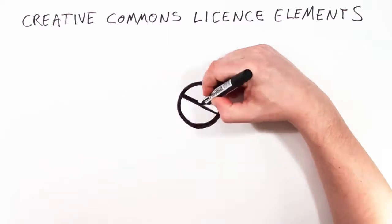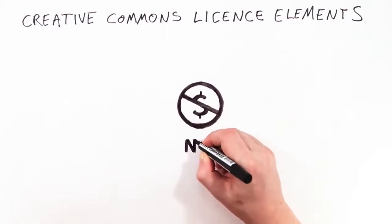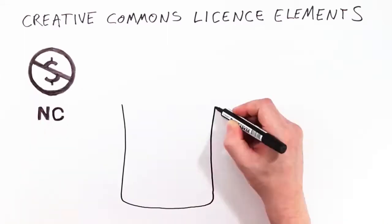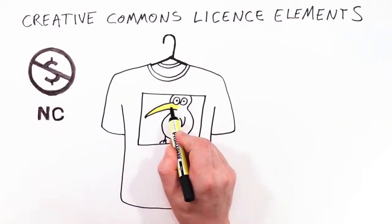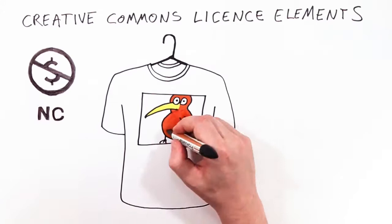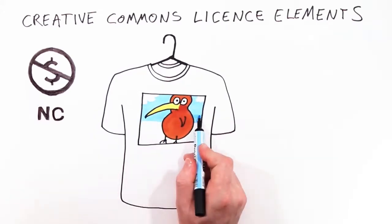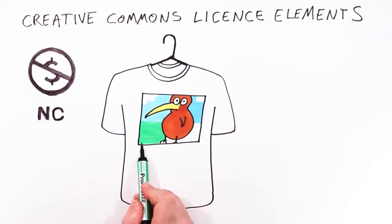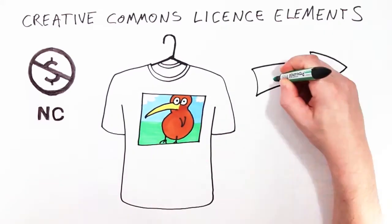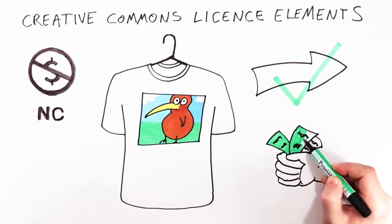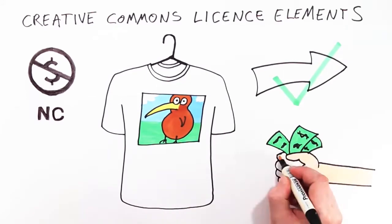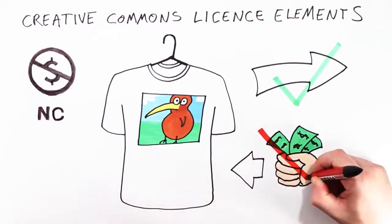This is non-commercial. It means no one else but Kiri is permitted to make money from CC Kiwi. Tim wants to print the photo onto t-shirts and distribute them to friends. He can do this but he must not sell them.